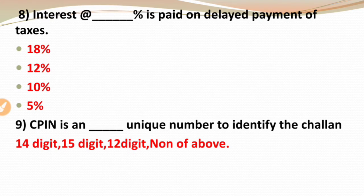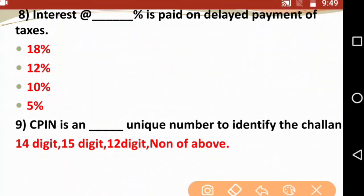Question eight: Interest at the rate of dash percent is paid on delayed payment of taxes. This is an important exam-oriented question. The options are 18%, 20%, 10%, or 5%. Remember, if you have not paid tax on time, interest is charged at 18%. So the right option is 18%.